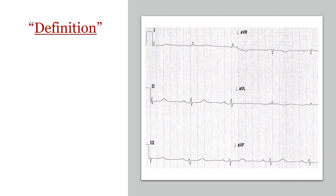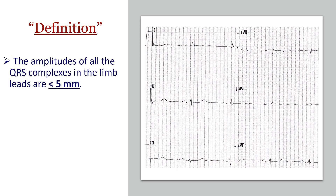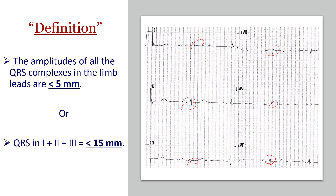What is low voltage ECG? Basically, low voltage ECG has many definitions — some are sensitive and some are specific. In ED we're always interested in the sensitive stuff because we don't want to miss anything. So the sensitive definition of low voltage ECG is: the amplitude of all the complexes in the limb leads are all less than five millimeters. Or you can say the sum of the complexes in leads I, II and III is less than 15 millimeters. That is the first definition.